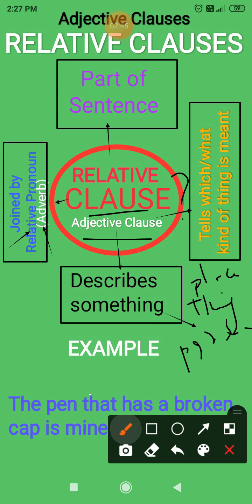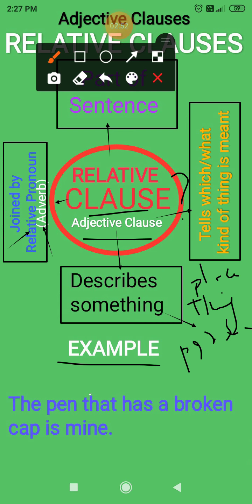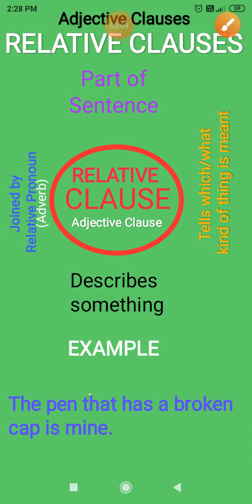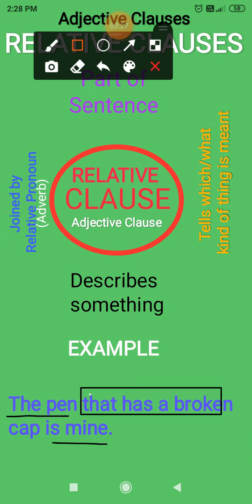So, let's take an example to illustrate what a relative clause is. The example is: 'The pen that has a broken cap is mine.' Here, 'the pen is mine' is the main part of the sentence — it's the main clause. And another clause is joined with it: 'that has a broken cap.' This second clause has been joined by the relative pronoun 'that' to the main clause.